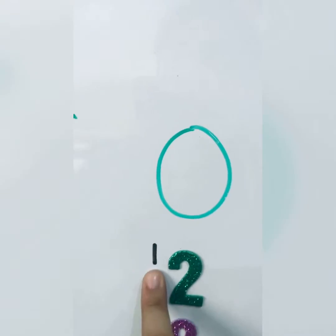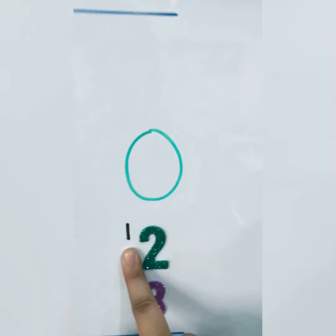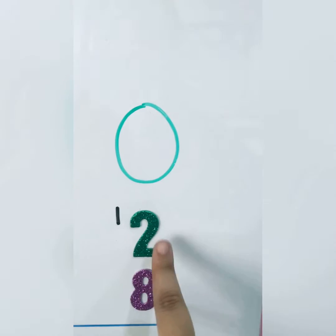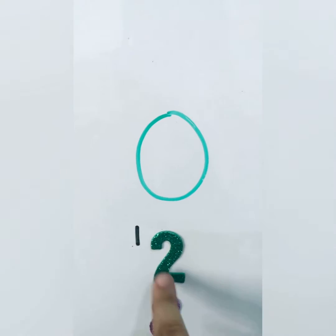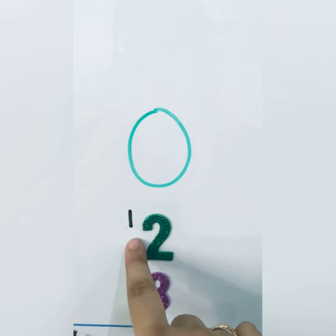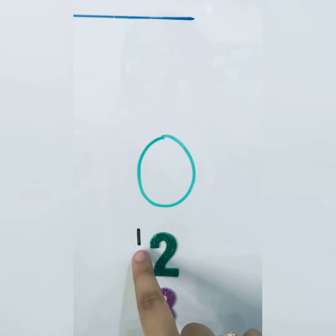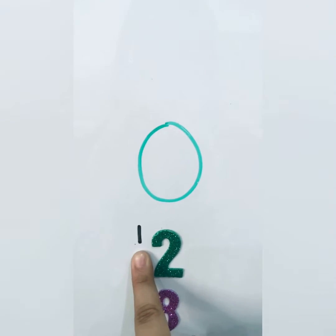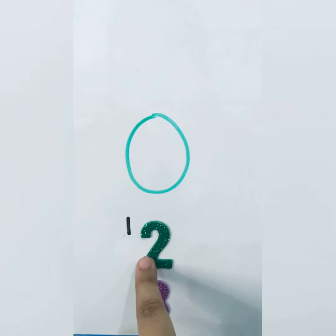One from the tens column is equal to ten. So this one is equal to ten. Now I have two over here. So this means ten plus two is twelve. I borrowed one from the tens column, so this is one ten. This makes it twelve.